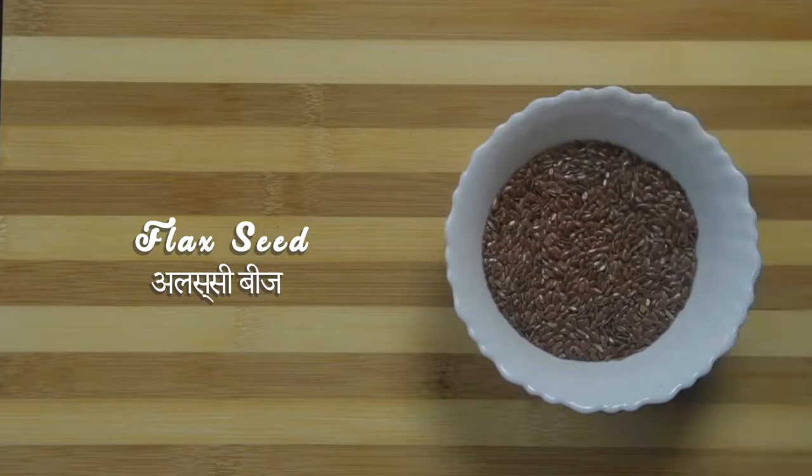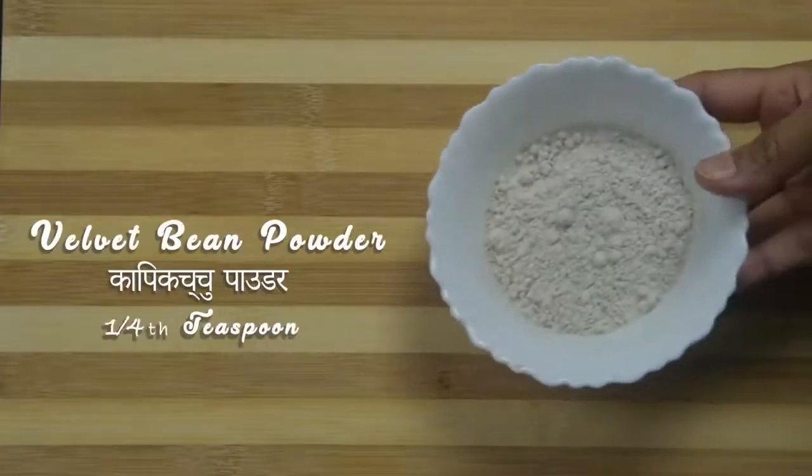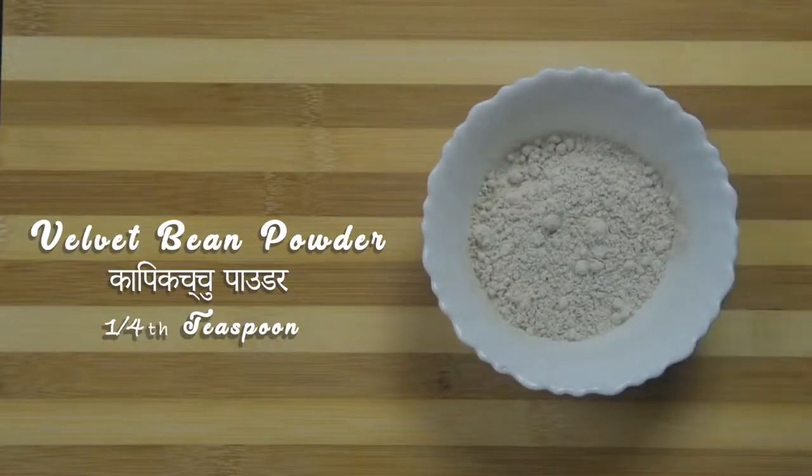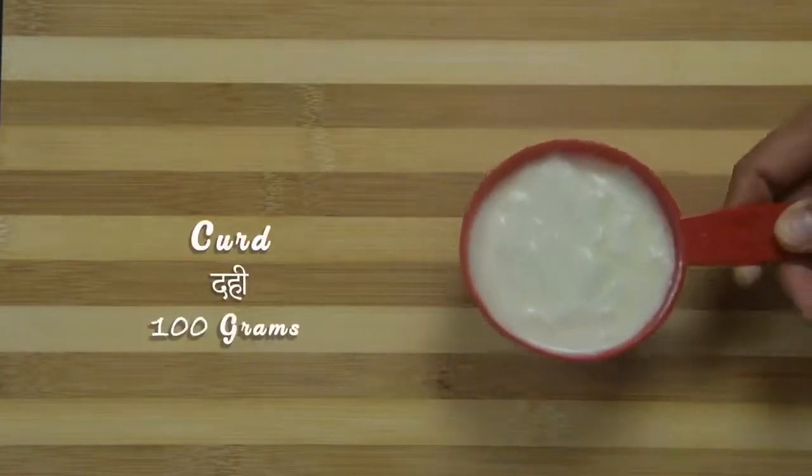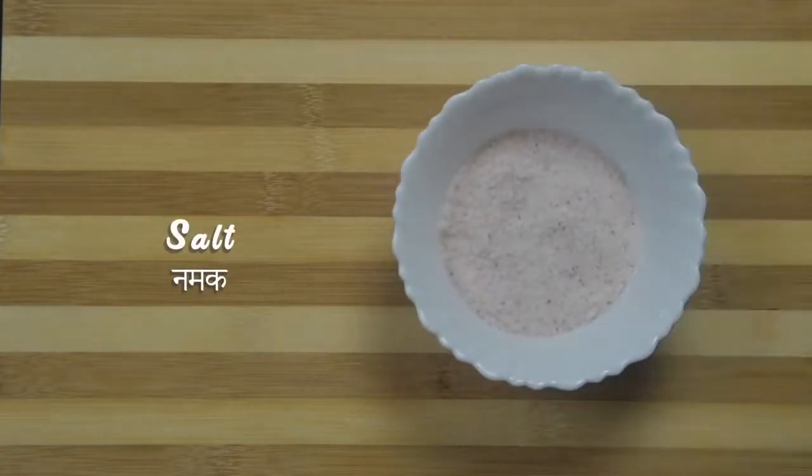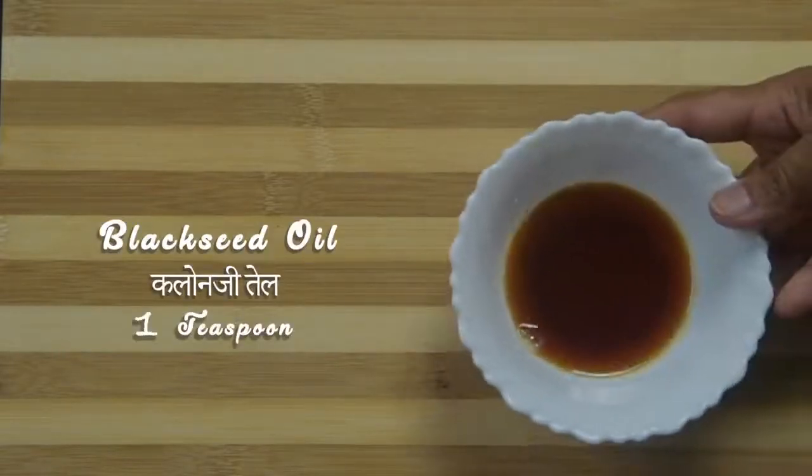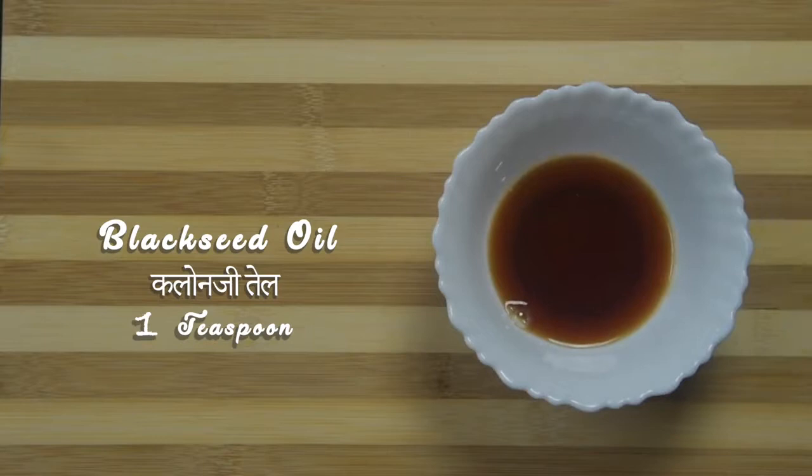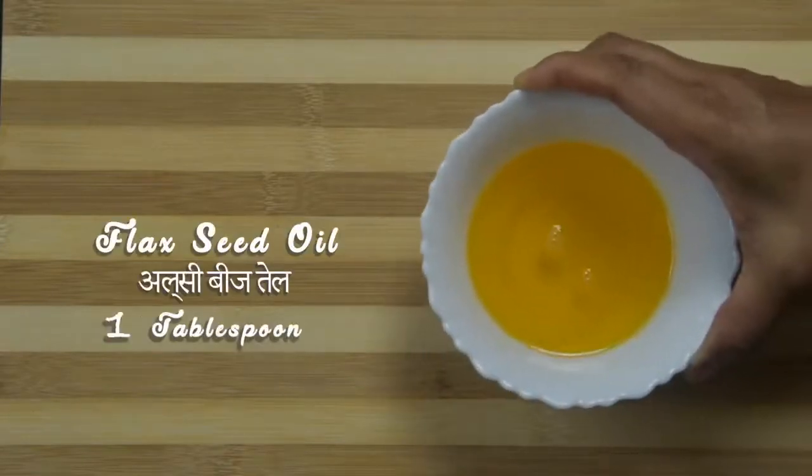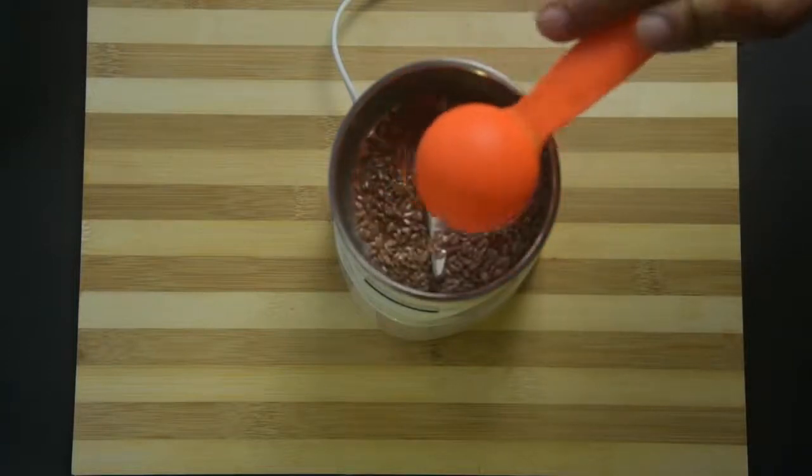Ingredients to make flax drink: 1 tablespoon flax seeds, 1 teaspoon spice powder, 1/4 teaspoon velvet bean powder or kapikacchu powder, 1 cup curds, salt to taste, 1/2 to 3/4 cup water, 1 teaspoon cold-pressed black seed oil or kalonji oil, and 1 tablespoon cold-pressed flax oil. Take flax seeds into a coffee grinder or small jar of a mixer grinder.